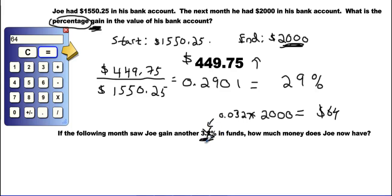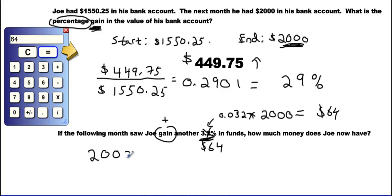Joe gained $64 — but he doesn't just have $64; he gained $64 on top of what he already had. So we add: $2,000 + $64 = $2,064. Joe now has $2,064 in his account.